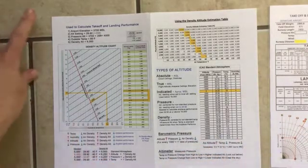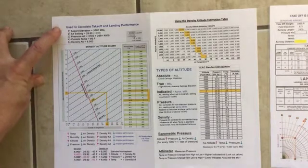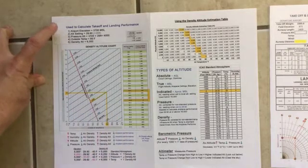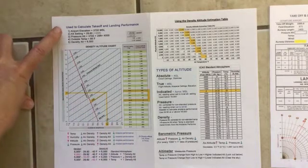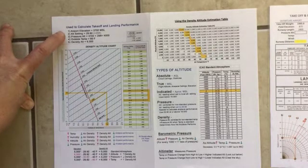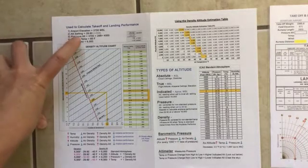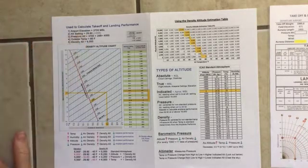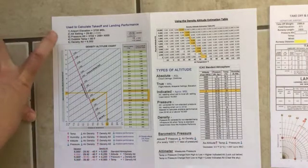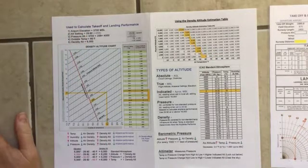Over here you've got a step-by-step of how to calculate your density altitude. You're going to start off with your airport elevation. You're going to look at your altimeter and the Kollsman window to see your setting. If it's set at 29.92 and you're at sea level, that would be standard. But we've got ours indicating 29.60.